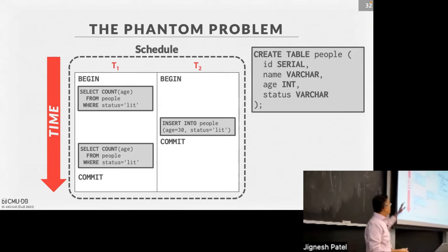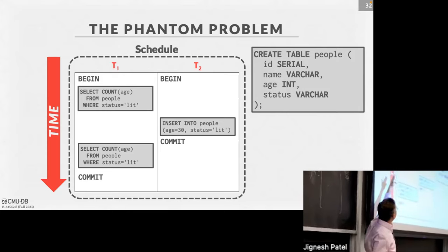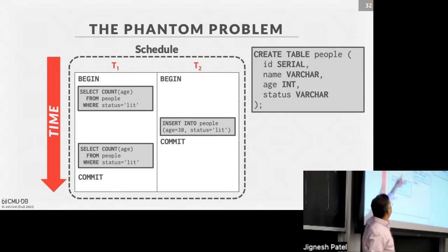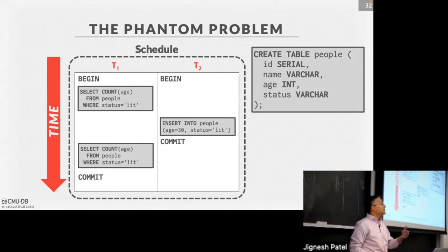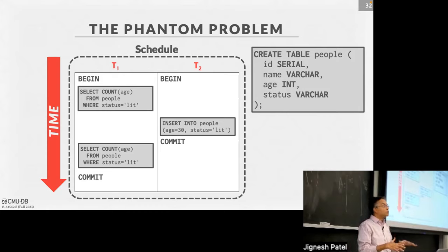Let me illustrate with an example. Here are two transactions — instead of read-write calls, I've put the SQL queries in. The first SQL query tries to find how many records are in the people table with status equal to 'lit', and it repeats that after a while. But in between, a new record got created. That new record should be in the answer, but the first query is not going to see it. When it ran, that record didn't exist. When it runs again, it does exist. Even if it grabbed a read-level lock on all the pages or records following two-phase locking protocol at that granularity, you would essentially get the wrong answer.